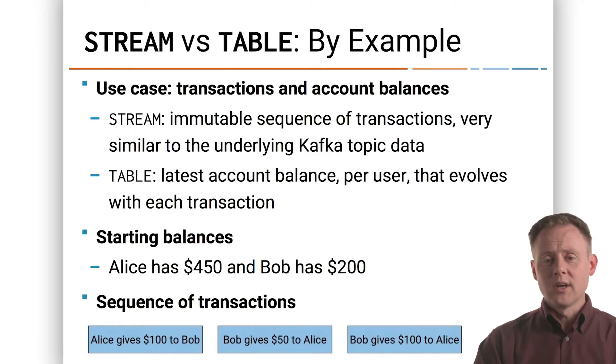Let's consider one very simple real-world use case and take a look at how streams and tables would deal differently with it. That use case is account balances and transactions that are transfers of money between those accounts. We've got a stream, which is going to be our immutable sequence of transaction events, money going from one account to another, which is going to be very similar to the underlying Kafka topic data that would be recording those events.